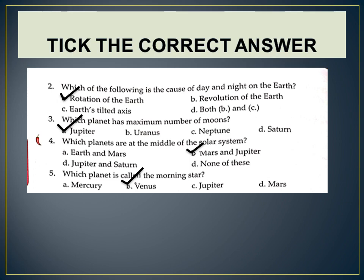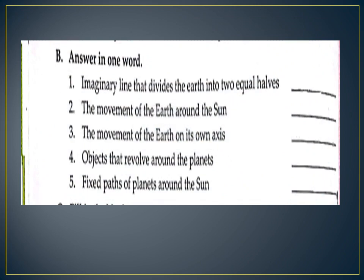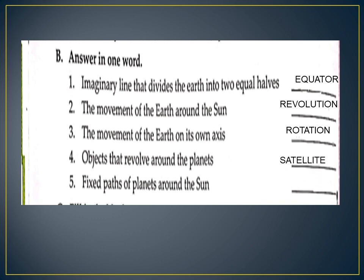Now answer in one word. Question 1: Imaginary line that divides the earth into two equal halves — answer: equator. Question 2: The movement of the earth around the sun — answer: revolution. Question 3: The movement of the earth on its own axis — answer: rotation. Question 4: Objects that revolve around the planets — answer: satellites. Question 5: Fixed paths of planets around the sun — answer: orbits.